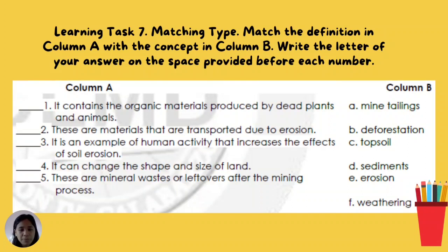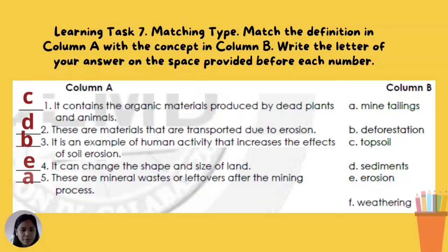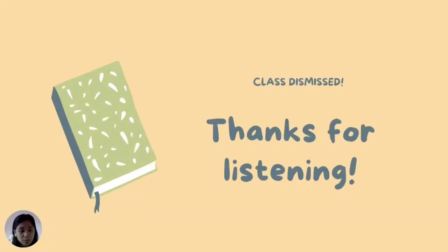For the next learning task — matching type: match the definition in Column A with the concept in Column B. Number 1: Contains organic materials produced by dead plants and animals. Number 2: Materials transported due to erosion. Number 3: An example of a human activity that increases soil erosion effects. Number 4: Can change the shape and size of land. Number 5: Mineral waste or leftovers after the mining process. Column B — A: mine tailings, B: deforestation, C: topsoil, D: sediments, E: erosion, F: weathering. Answers: 1-C, 2-D, 3-B, 4-E, 5-A. That ends our lesson for Week 2, Quarter 4 of Science. Thanks for listening and happy learning!